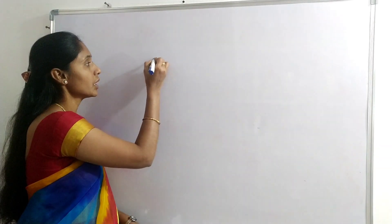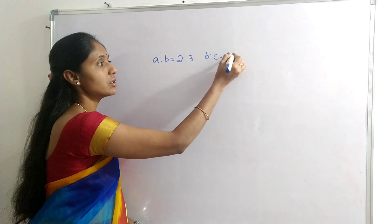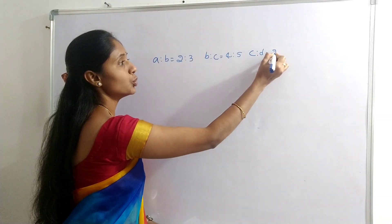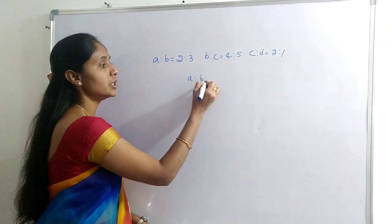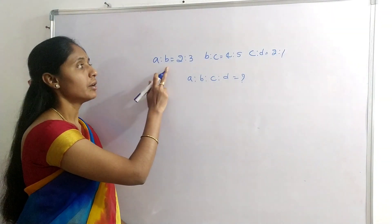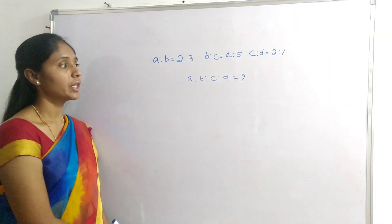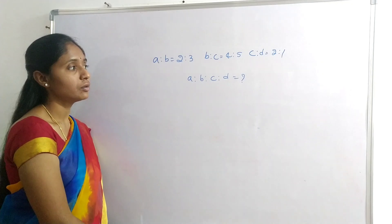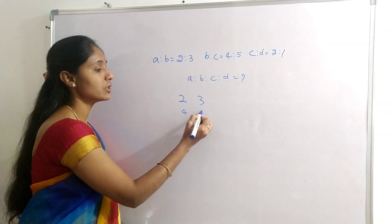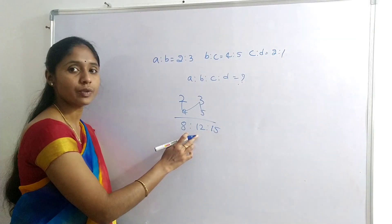Next question: A:B = 2:3, B:C = 4:5, C:D = 2:1. Find A:B:C:D. Here, 4 factors are there. First, find A:B:C using reverse N: 4×2 = 8, 4×3 = 12, 5×3 = 15. So A:B:C = 8:12:15. Next, C:D = 2:1, and C value is 15.